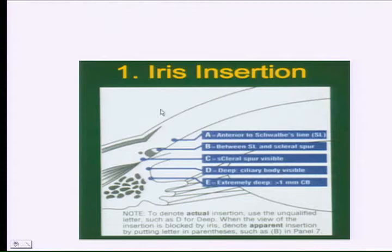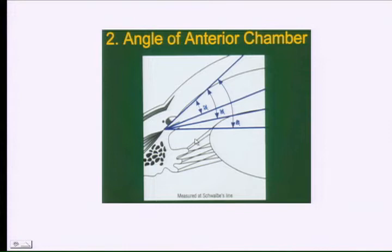So, this is the iris insertion. A, anterior to Schwalbe's line. B, behind Schwalbe's line. C, scleral spur is visible. D, ciliary body is visible. E, a millimeter of the ciliary body is visible. That's the iris insertion component of the configuration.